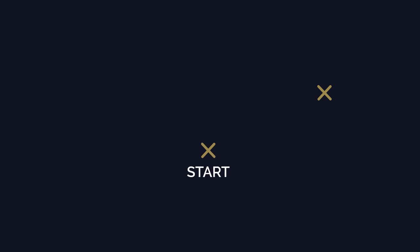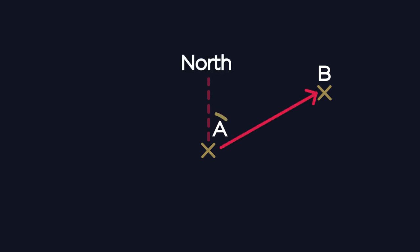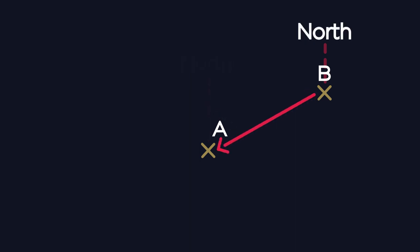To measure a bearing from one place to another, we have to consider where we are being asked to start. To measure B from A, find the north line at A, then form and measure the angle to B. To measure the bearing of A from B, start at B, form the angle to A, and measure the angle, remembering to move clockwise.